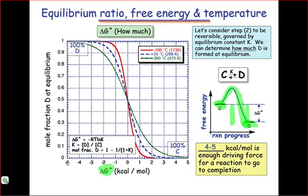At negative values of delta G0, you can see that we have very high amounts of D in the reaction mixture, meaning that the reaction goes very favorably towards the products.